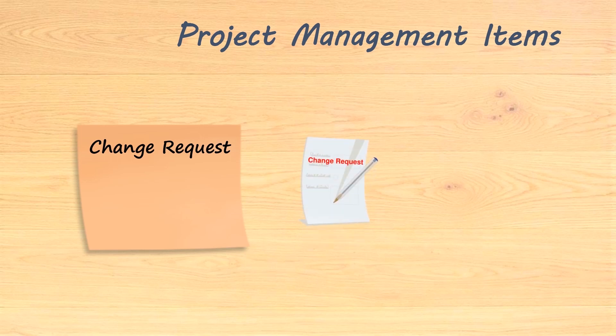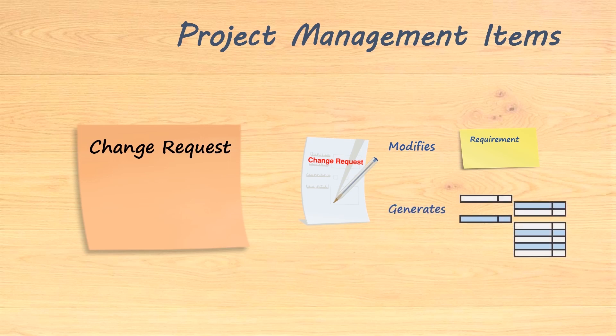The change request type of item is one of the most important elements for the team — not only because of what it represents, but also because of how important the content is. Registering change requests in Jira can help the team ensure that nothing gets lost, no matter how simple it may seem. The change request should be linked to the several items it will affect, which can be represented via two different dimensions. On one hand, connect to the items impacted by the change request, like a requirement that will need to be changed. On the other hand, the work items that will be generated and implemented by the team as a consequence of the change request, like a new feature and the corresponding user stories.